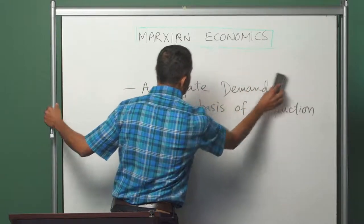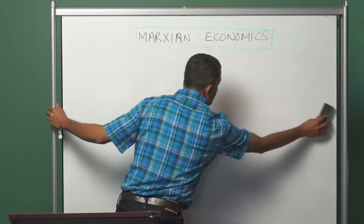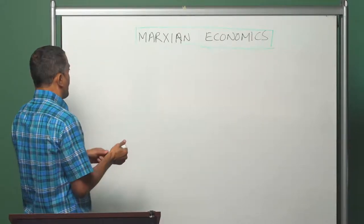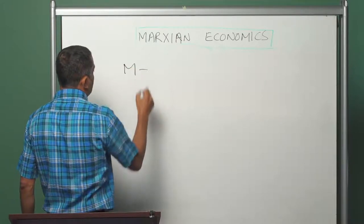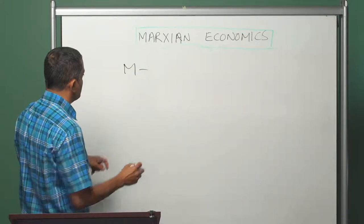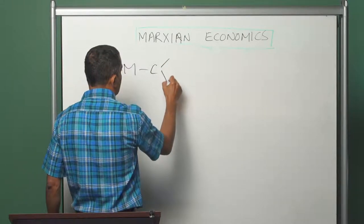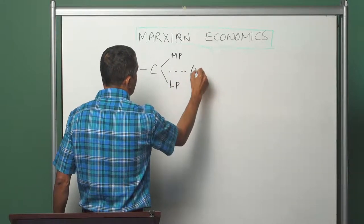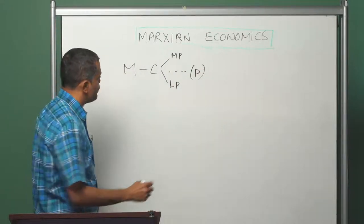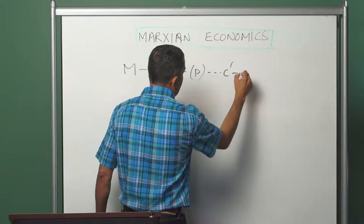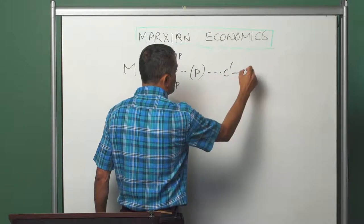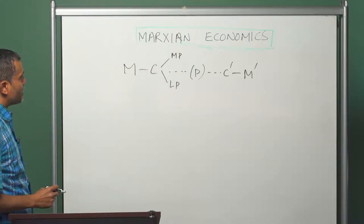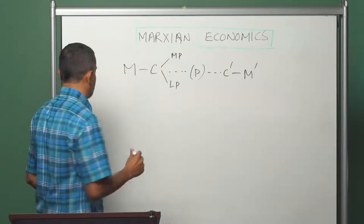The question of aggregate demand can be understood again using the circuit of capital. The capital starts with a sum of money, goes to the market, purchases two types of commodities — means of production and labor power — brings them together in the production process. The finished commodity comes out and then it is sold for a sum of money. The question of aggregate demand really boils down to two types of issues: one is the issue of finance, and the other is the issue of spending.